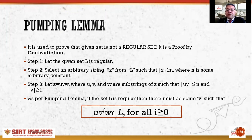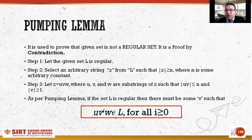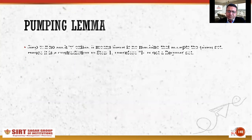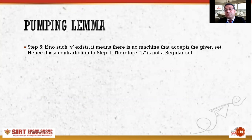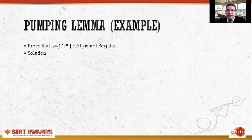If the expression u·v^i·w belongs to L holds true for every value of i, we say the set is regular. If for any case this expression is proven false, we say the set is not regular. At the end, if no such v exists — meaning there is no machine which can accept the given language — that is a contradiction to step one, and therefore we declare L is not a regular set.